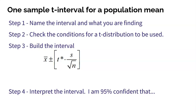Step one, when you're conducting a one-sample t-interval to find a population mean, is to name the interval and specifically say what it is you're trying to find the population mean of. Step two is check those conditions for a t-distribution to be built.